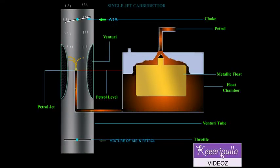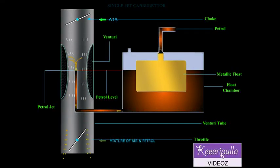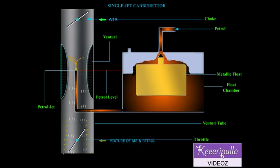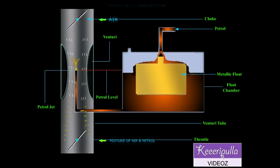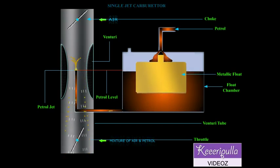Now we shall discuss the working of the simple carburetor. During the suction stroke of the engine, vacuum is created in the engine cylinder.